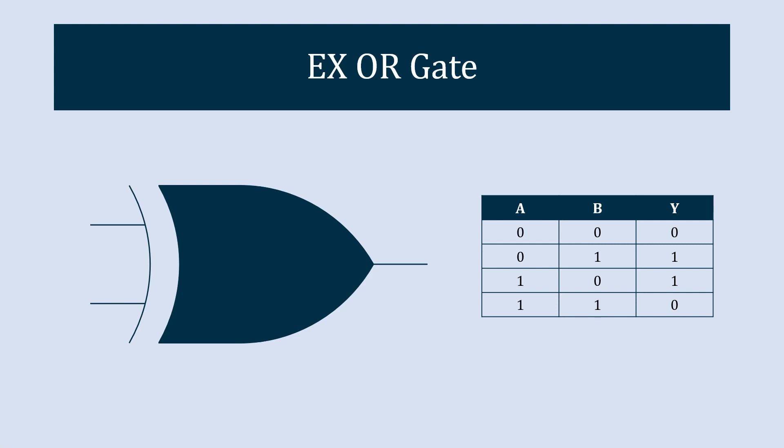The output of the XOR gate is 1 if the inputs are different. When the two inputs are different the output will be 1 — that is how we can simply remember the truth table of the XOR gate.